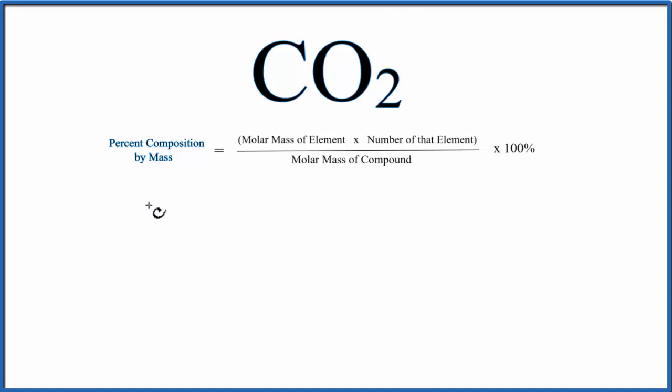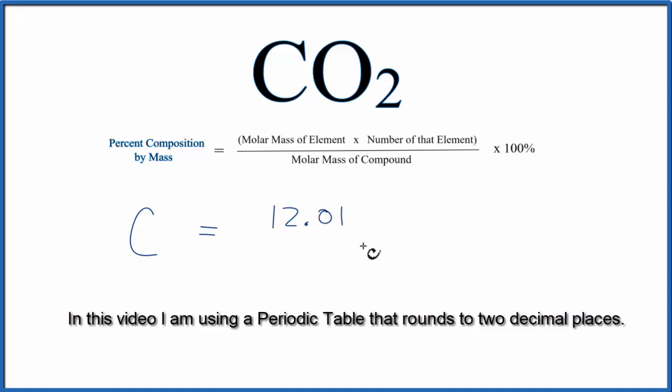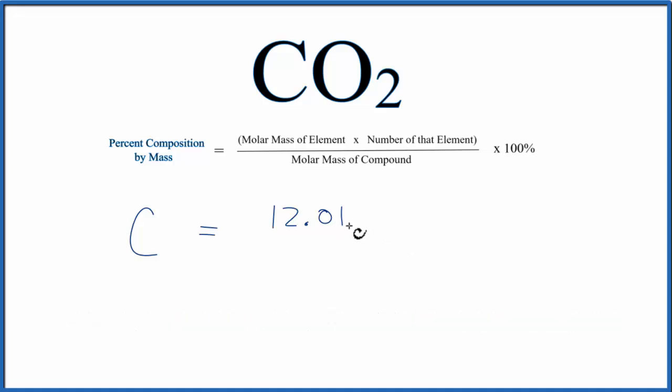So let's do carbon first. We have carbon, and that equals the molar mass of the element. We go to the periodic table. Carbon is 12.01 grams per mole. I'm not going to write the units because they'll be on the top and the bottom, and they'll just cancel out. So 12.01 grams per mole, we only have one carbon here. So the number of carbons is one.